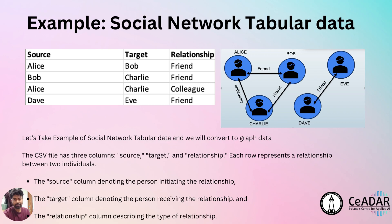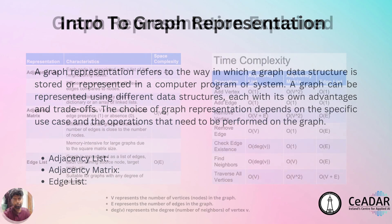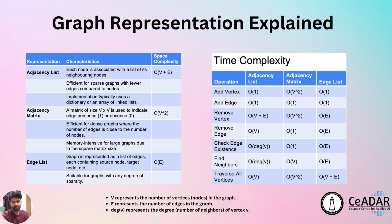Before going to the implementation, we have an important concept to discuss — the building block of graph conversion in Python: graph representations. A graph representation refers to the way in which a graph data structure is stored or represented in a computer program or system. A graph can be represented using different data structures in Python, each with its own advantages and trade-offs. The choice depends on the specific use case and operations to be performed.